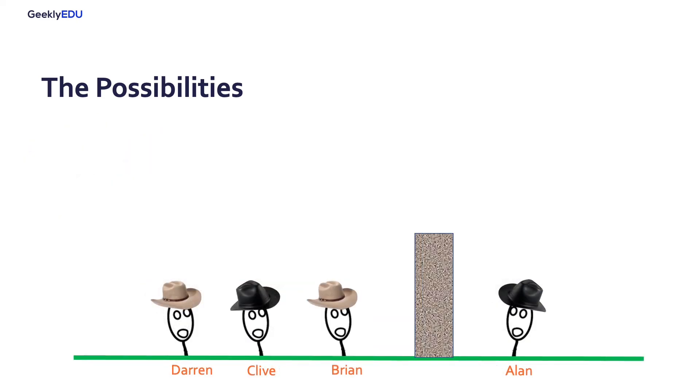Darren can see two hats, so he can think of two possible solutions, but the thing is, he's not sure about the color of his hat either.